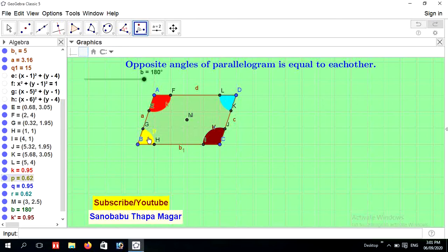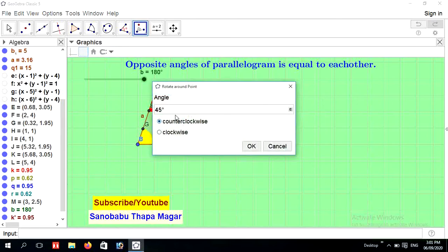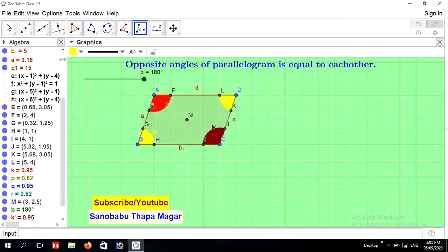Select this angle and point N and write here name of the slider. You can see here angle A is accurately fit with angle C and angle B is accurately fit with angle D. It's proved that opposite angles of parallelogram are equal to each other.